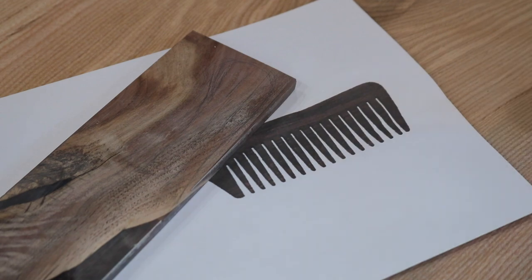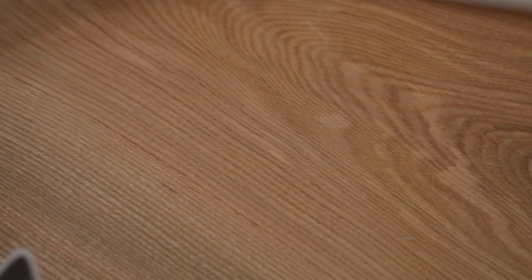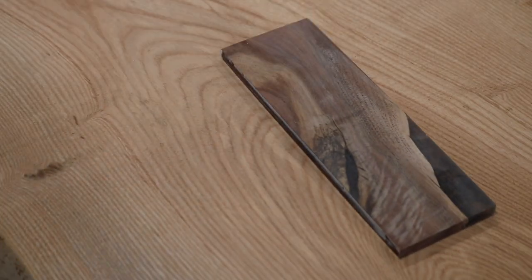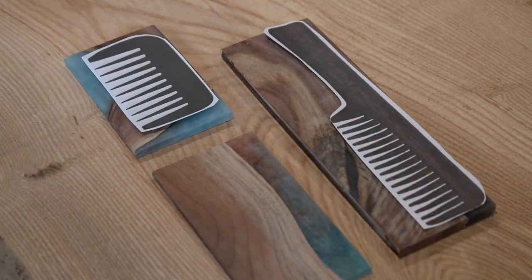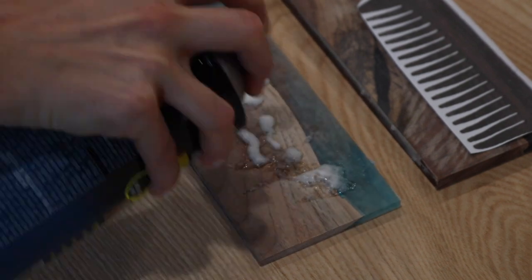Next, it was time to lay out my designs, and to make my life easier, I actually decided to print a couple of different templates off the internet of different types of shapes of combs that I really liked. And once I was happy with the layout and the design and the shape, I then used some spray adhesive to attach the stencil to the piece.